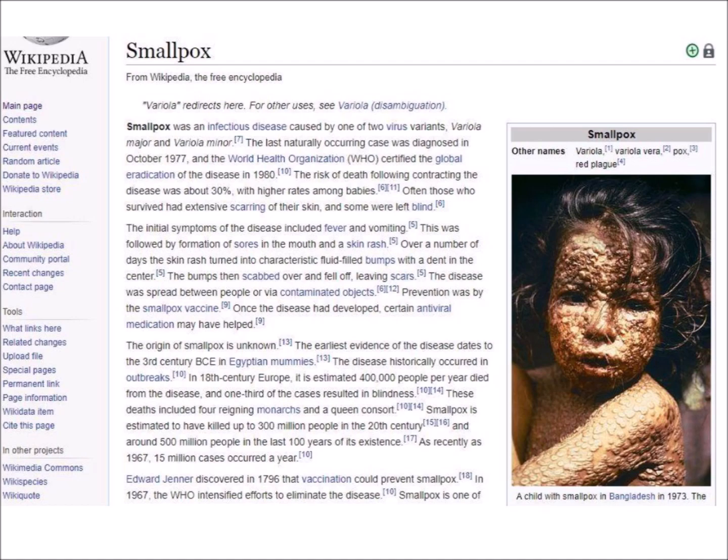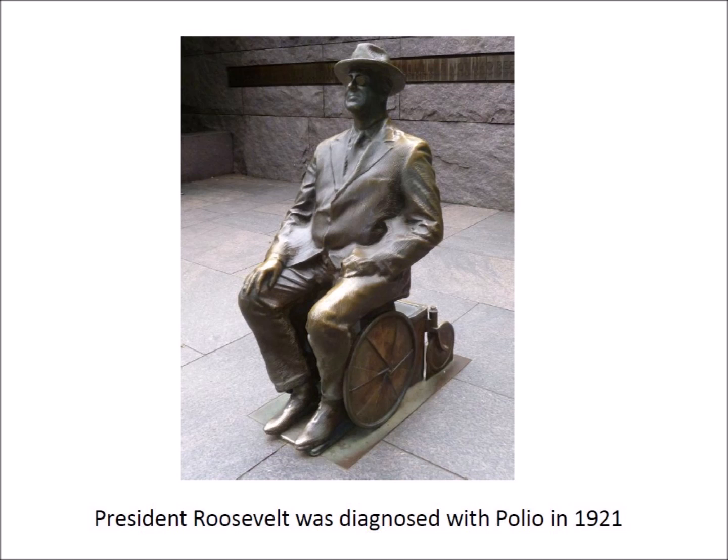Polio, or poliomyelitis, is an infectious disease caused by the poliovirus. It can cause muscle weakness and paralysis. President Franklin D. Roosevelt was diagnosed with polio in 1921. His memorial in Washington, D.C. has a statue of him in a wheelchair. Dr. Jonas Salk developed a vaccine in 1955 that has virtually eliminated the disease from the modern world.